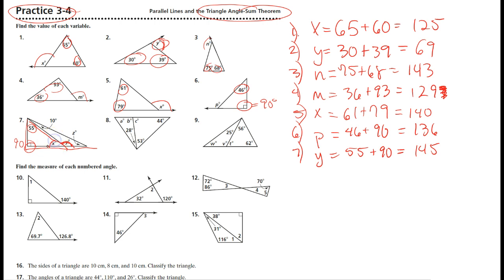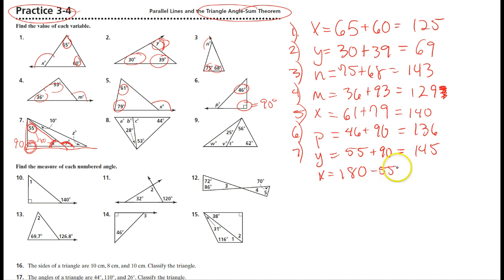For x, we don't have to use the exterior angles idea. We can just use the fact that the sum of the interior angles of a triangle always adds up to one hundred and eighty. So if I've got x, ninety, and fifty-five, then x equals one hundred and eighty minus fifty-five minus ninety, which gives x equals thirty-five.